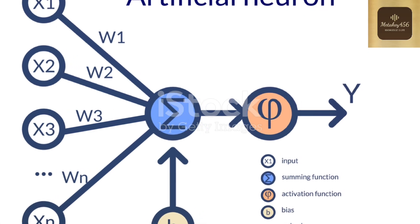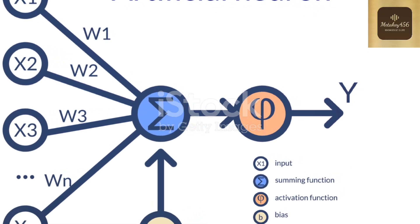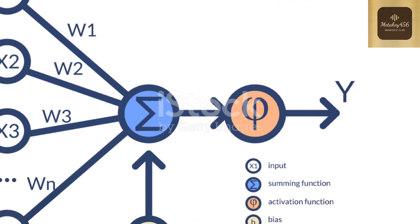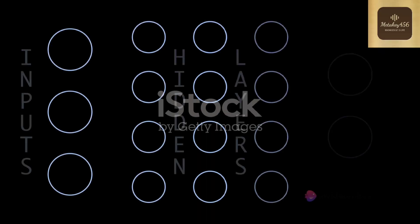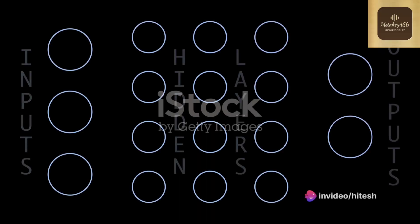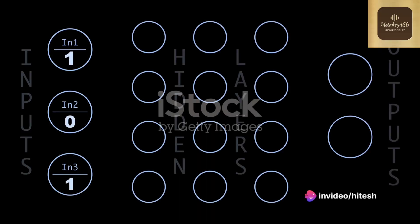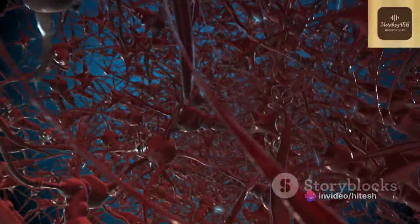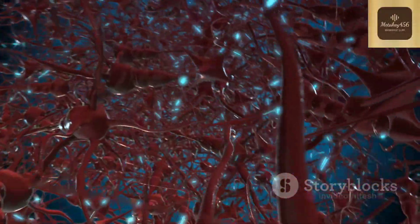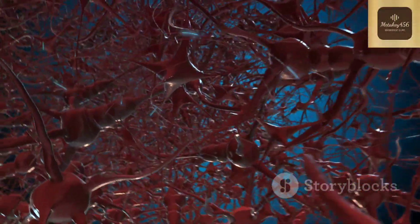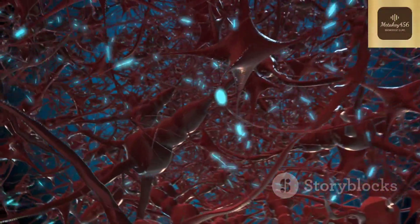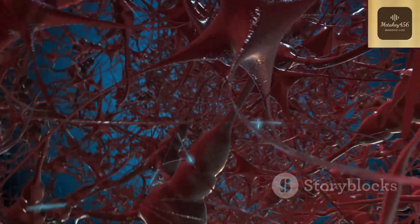The neuron receives multiple inputs, each assigned a particular weight. It processes these inputs, applying the weights and adding a bias. This output then passes through an activation function, which determines if and to what degree the neuron fires.